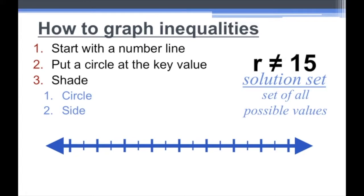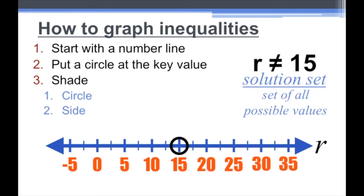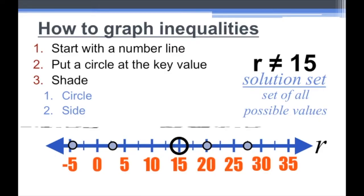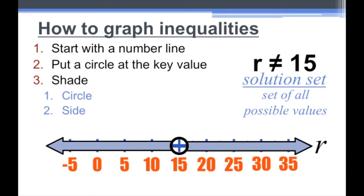How about this one? R is not equal to 15. We label the variable R on our number line, place the key value 15, and put a circle there. R cannot be 15, so what can R be? It can be 20, 27.5, negative 4.5, 3 — any number on the number line as long as it is not equal to 15. So we shade arrows to both sides of the circle. We don't fill the circle itself because we only shade the circle inside if the value equals that key value — since it doesn't, we leave it empty.